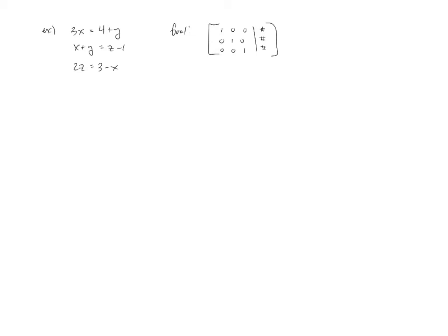So in terms of this example, the first thing that I would do is I would probably rewrite it in a more traditional way. For example, I would want to view this as 3x minus y plus 0z equals 4, x plus y minus z equals negative 1, and then x plus 0y plus 2z equals 3.